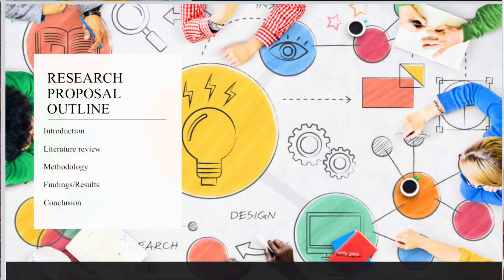The first thing we need to do is outline what exactly goes into a research proposal. You've got your introduction, your data collection, your research methodology, reading the results, and ultimately your conclusion. But there's one element we're missing — the big literature review.